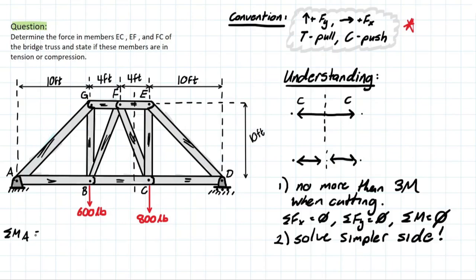So, the moment at A will equal zero. And this is just very simple stuff that we've done before that I hope you remember. We have negative 600 because it's going clockwise 10 feet away from support A, minus the 800 as well, which is 18 feet away.